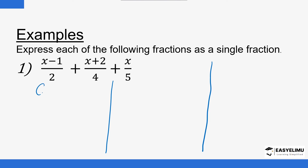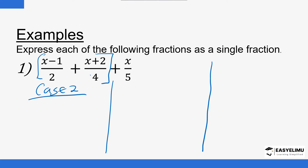Case Two is basically an alternative approach. I'm going to simplify the first two terms first, because when there are two terms you can use the cross multiplication approach. You multiply diagonally — starting with the first diagonal: 4 into (x − 1) plus 2 into (x + 2).